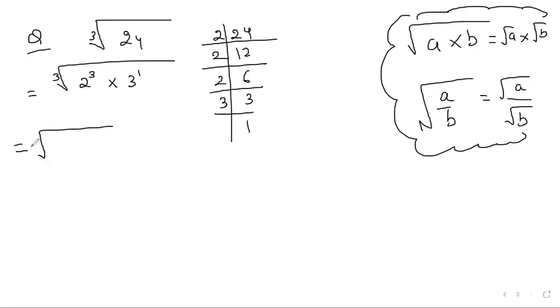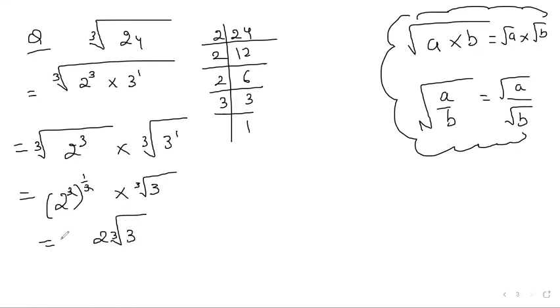So what I can do, cube root of 2 cubed multiply cube root of 3. This can be solved, isn't it? So that can become 2 to the power of 1. But this cannot be solved, isn't it? Power is 1. So it will remain same. This is the answer.